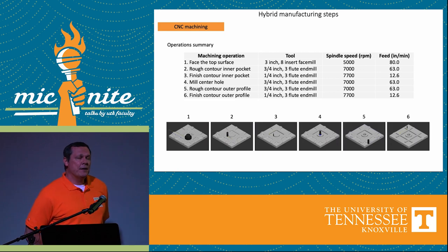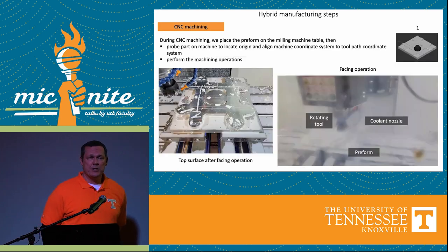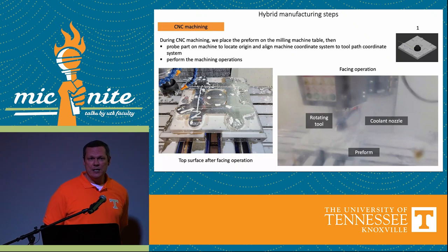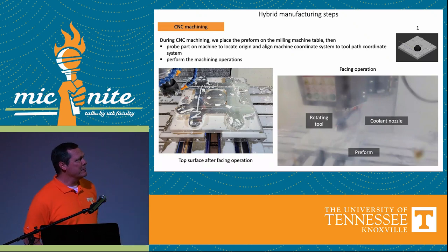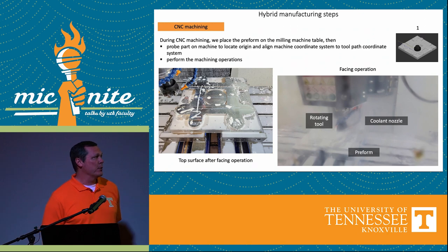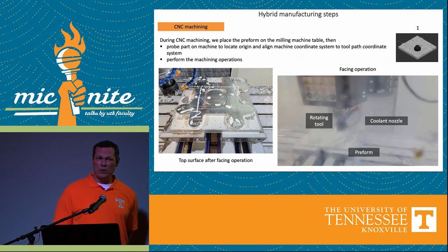On the left we can see a picture of the part on the CNC — computer numerically controlled — milling machine. We've machined it flat in that operation, and on the right is a photo of what it looks like.